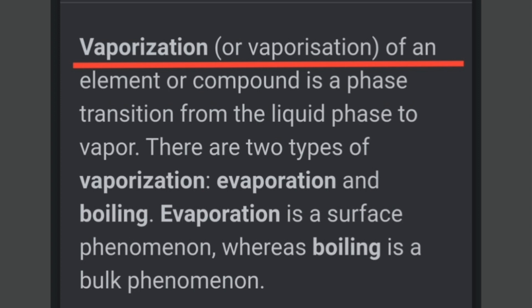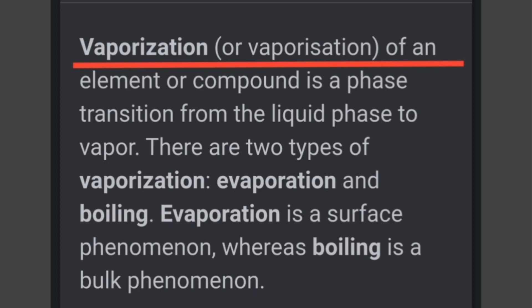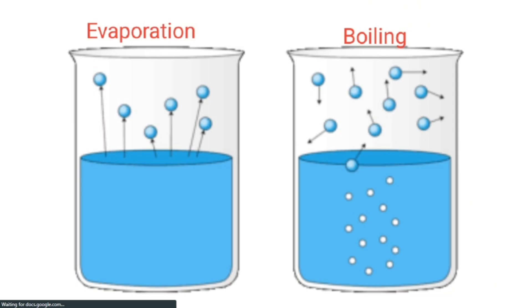Evaporation and boiling are not the same. Evaporation is a surface phenomenon, whereas boiling is a bulk phenomenon. Here you can see the liquid boiling. In evaporation, it is only at the surface of the liquid — evaporation takes place only at the surface — but in boiling, it is taking place in the bulk of the liquid.